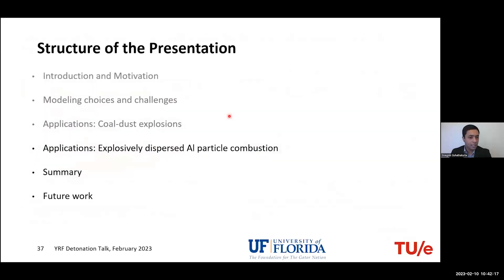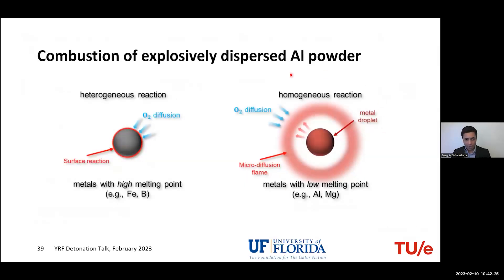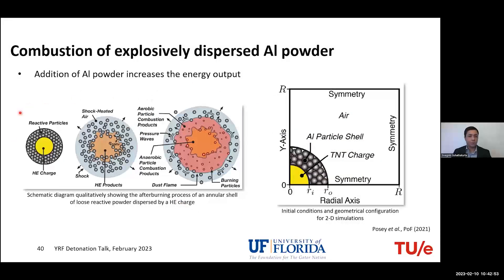Now let's quickly look at aluminum particle combustion. A reminder: aluminum, having a low melting point, is assumed to evaporate into the gas phase, with the entire reaction taking place in the gas phase — a homogeneous reaction — as opposed to coal, which involves a combination of both mechanisms. The scenario we study is a core of high explosive charge covered by a reactive aluminum particle layer, and we study what happens when the charge is detonated and the particles are dispersed and start burning.